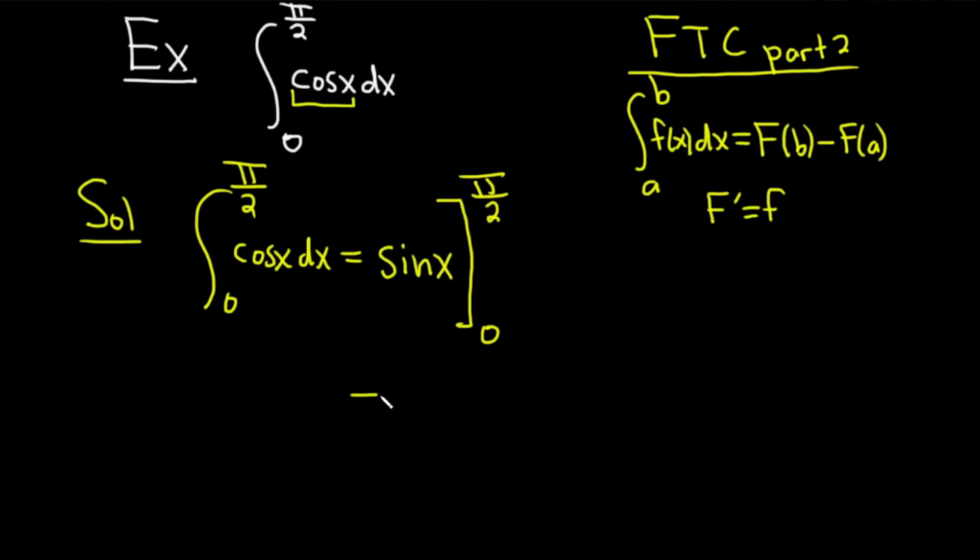Then you plug in the top number first. So this is the sine of π/2 minus the sine of 0. The sine of π/2 is 1. Sine of 0 is 0. So you just get 1 as the answer.